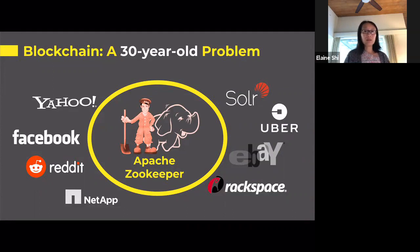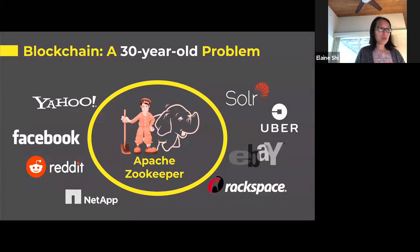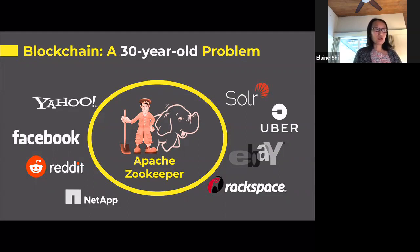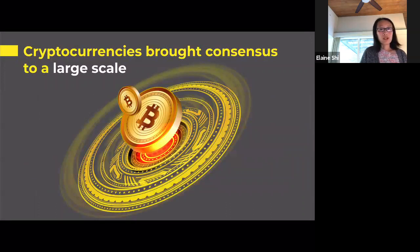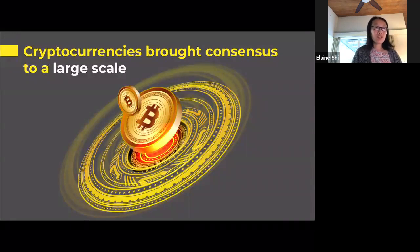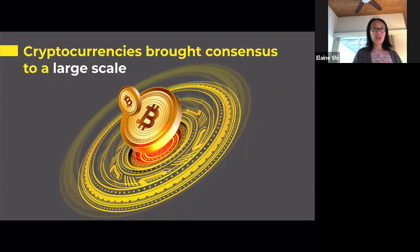I got interested in consensus because of decentralized cryptocurrencies, but actually consensus has been around and studied for more than three decades. For more than a decade, companies in Silicon Valley have applied consensus to have redundancy and replication in their computing infrastructure. Cryptocurrencies took consensus to the next new level — Bitcoin showed for the first time that consensus is actually possible on the Internet scale, and not only so, in a completely open permissionless environment.